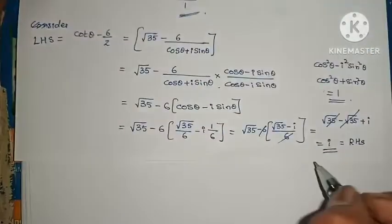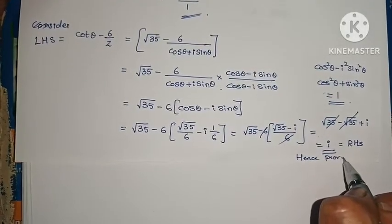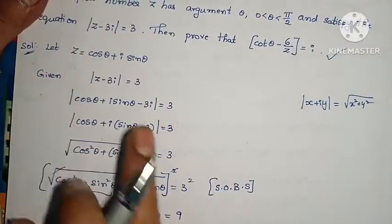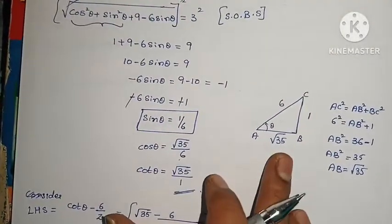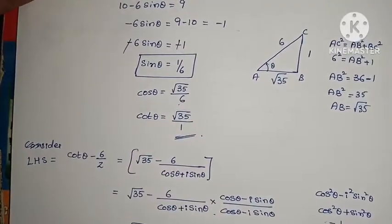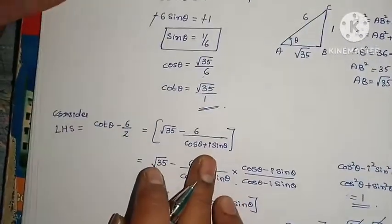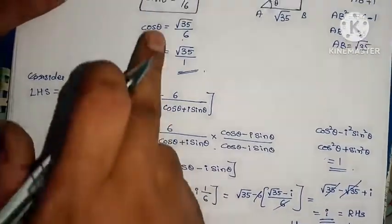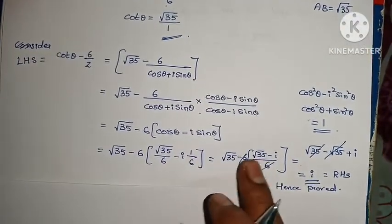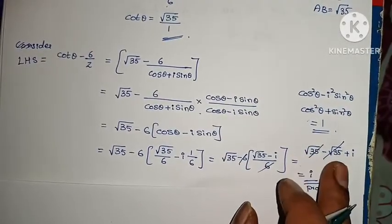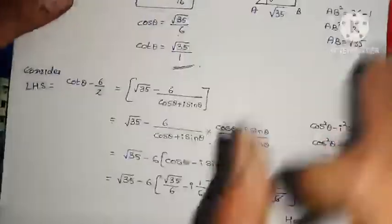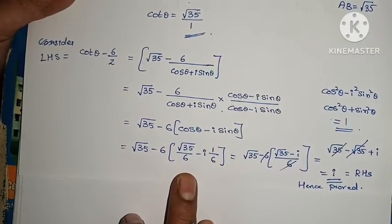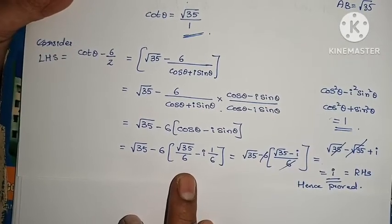LHS equals RHS, hence proved. This is a very simple problem. Z = cosθ + i sinθ, and substituting the values of cosθ and sinθ with the same denominator, the √35 terms cancel and we get i. The complex numbers chapter is now complete. We need to do full marks in this chapter.